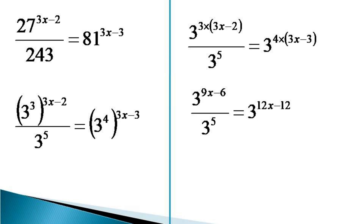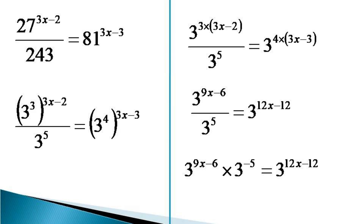On the left hand side, 3 raised to the power 5 in the denominator can be expressed as 3 raised to the power minus 5 in the numerator, and the equation becomes 3 raised to the power 9x minus 6 into 3 raised to the power minus 5, equal to 3 raised to the power 12x minus 12.